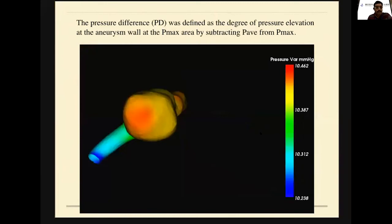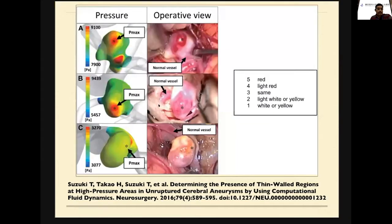The next parameter most commonly seen is the pressure difference. It was defined as the degree of the pressure elevation at the aneurysmal wall at the Pmax area by subtracting P-average from the Pmax. In this aneurysm, at the top of the sac, we can see the pressure variable which is significantly high. The study by Sujiki et al. studied Pmax and P-variable and concluded that areas with Pmax and P-variable have the potential to develop changes in the wall and cause blebs, which is most commonly because of apoptosis.